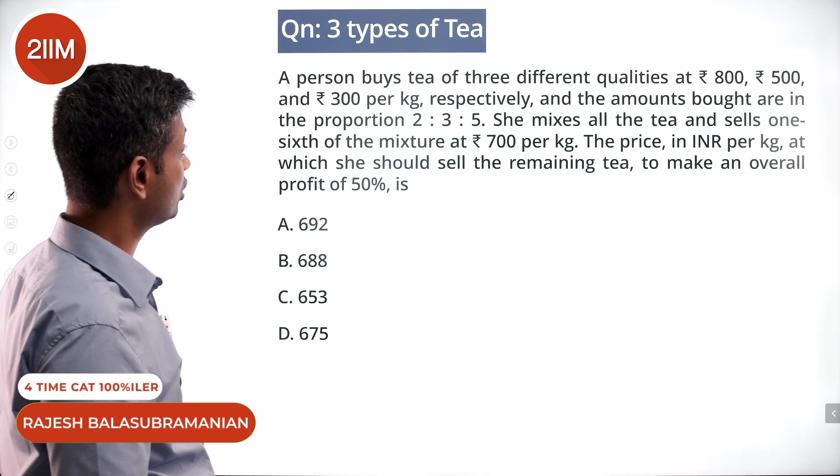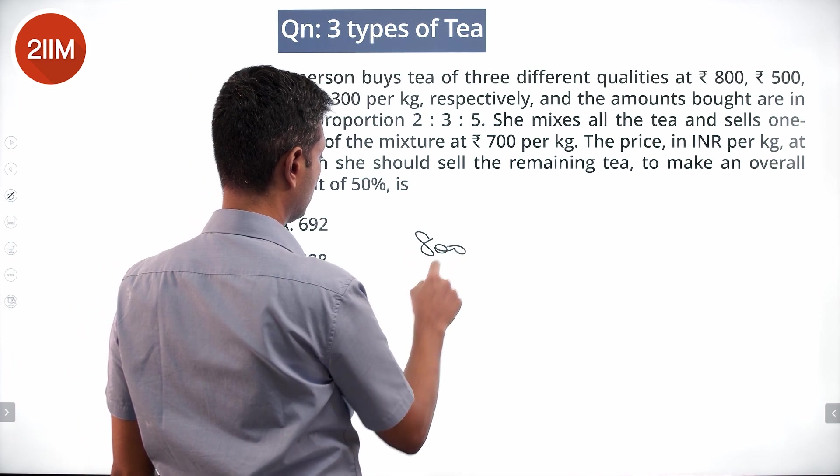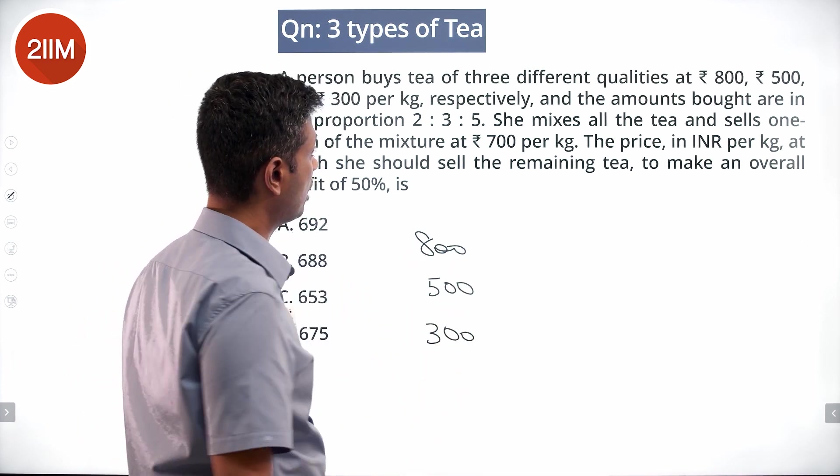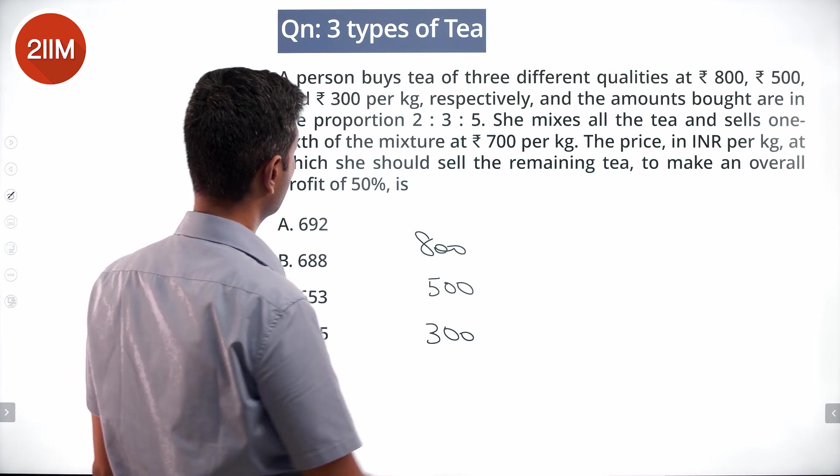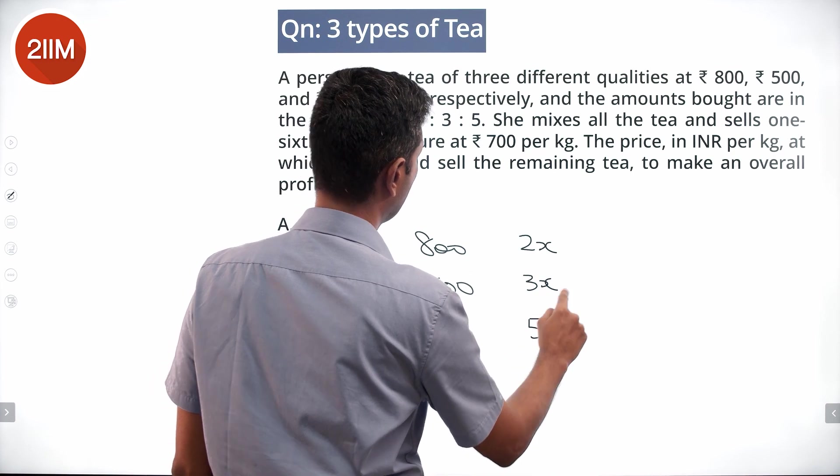A person buys tea of three different qualities at 800, 500, and 300 per kg. The amounts bought are in the proportion 2:3:5. So 2x, 3x, 5x.